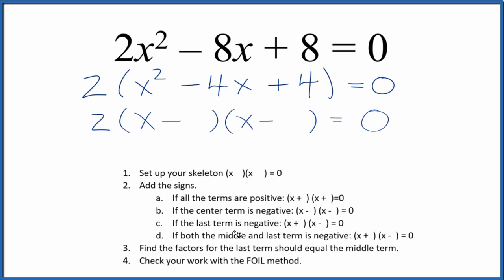Now we want to find the factors for the last term here, the 4, and the factors should add up to the middle term. So for 4, 2 times 2 gives me 4, 2 plus 2 is 4. So I'm just going to put 2's in here, and we're done. We factored this equation, 2x squared minus 8x plus 8, or you could say we just factored x squared minus 4x plus 4.